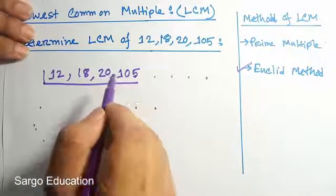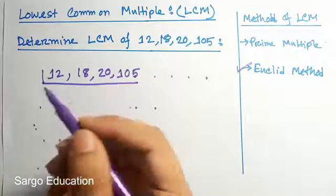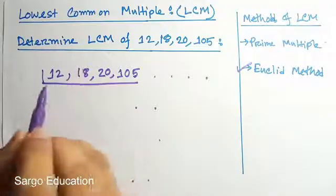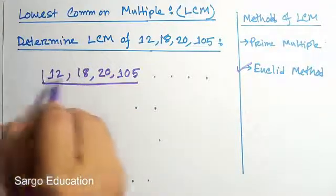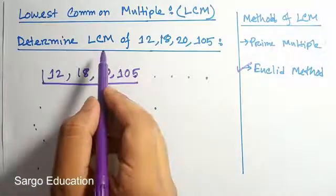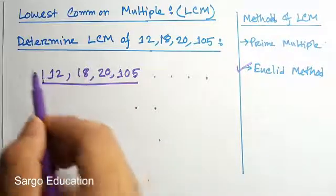We see these three numbers can be divided by 2, but 105 is not. You will remember that for determining GCF you can take the smallest number by which you can divide all of the numbers. But for determining LCM it is not mandatory.